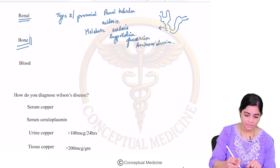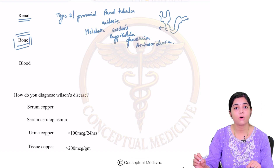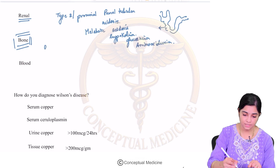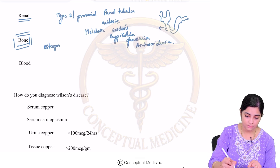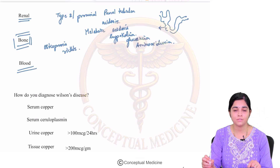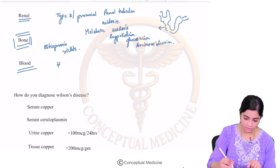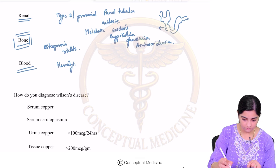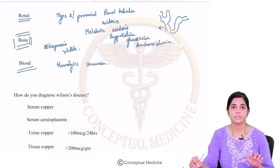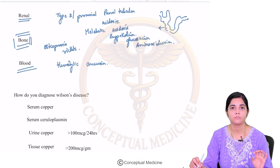For the bone: whenever you have long-term severe metabolic acidosis, there can be bone resorption, and hence there is a predisposition to osteoporosis and rickets. In the blood, copper is toxic to the RBCs and you can have a hemolytic anemia. So these are about the clinical features: hepatic, neurologic, psychiatric, endocrine, renal involvement, blood, and bone involvement.